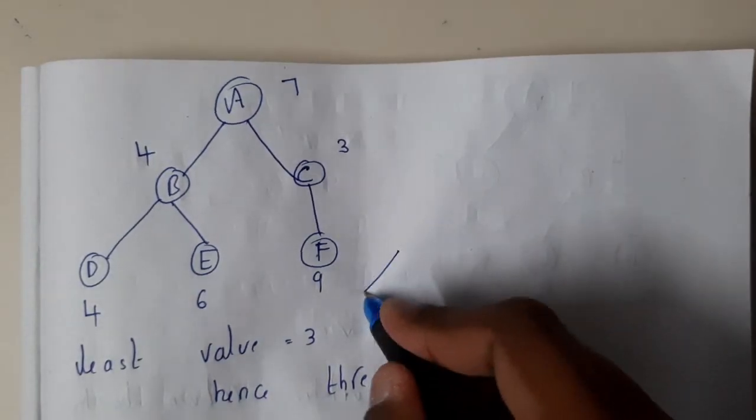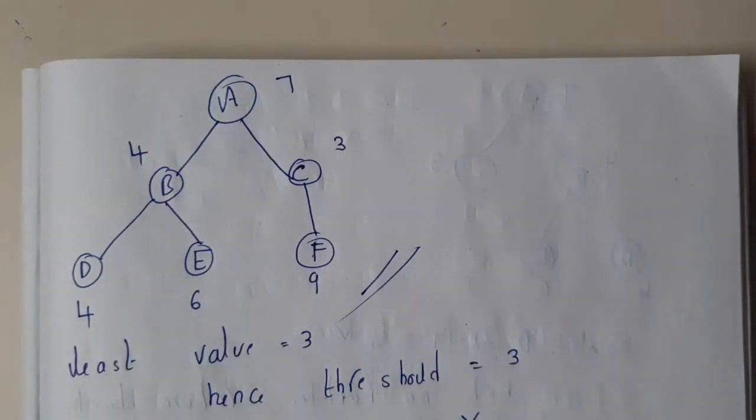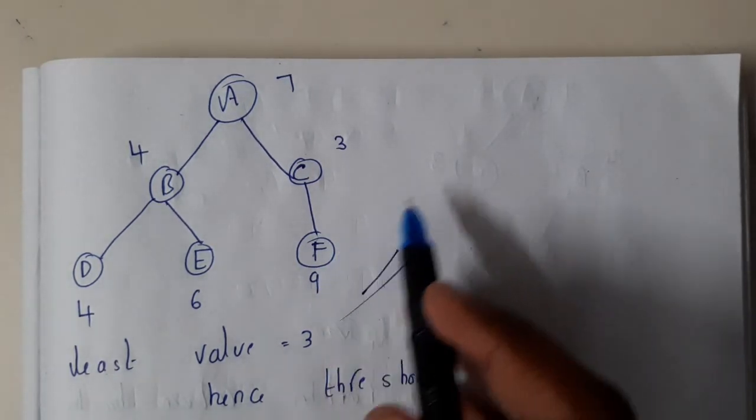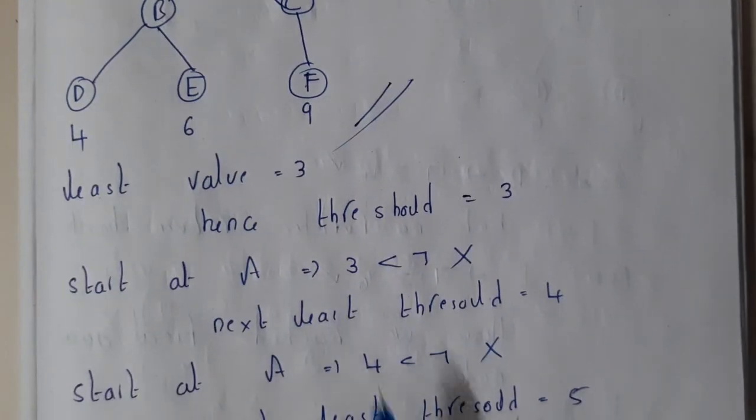So now you will be starting from the start node. Okay, so now the final diagram is this. So in the whole diagram, what is the least value guys? So the least value of g(n) is nothing but 3, right? So you will be assuming the threshold as 3.